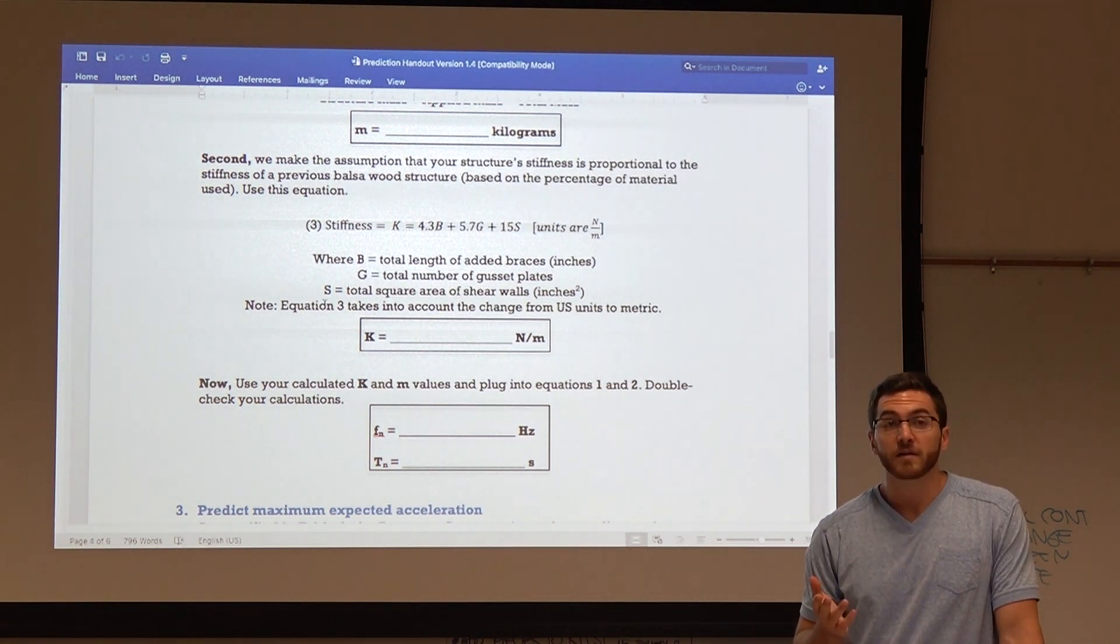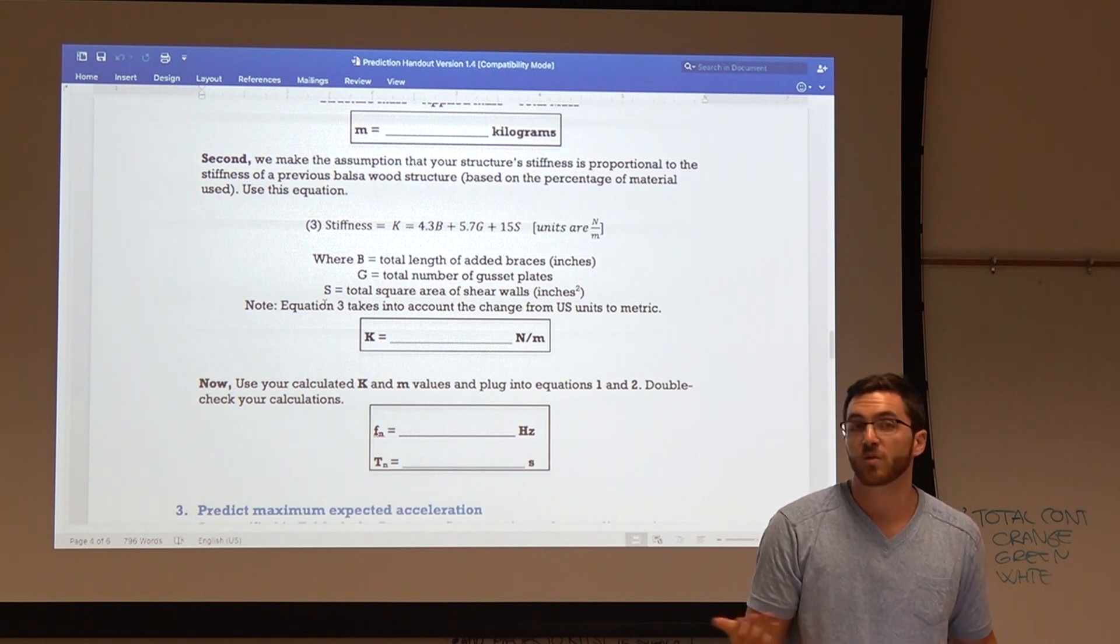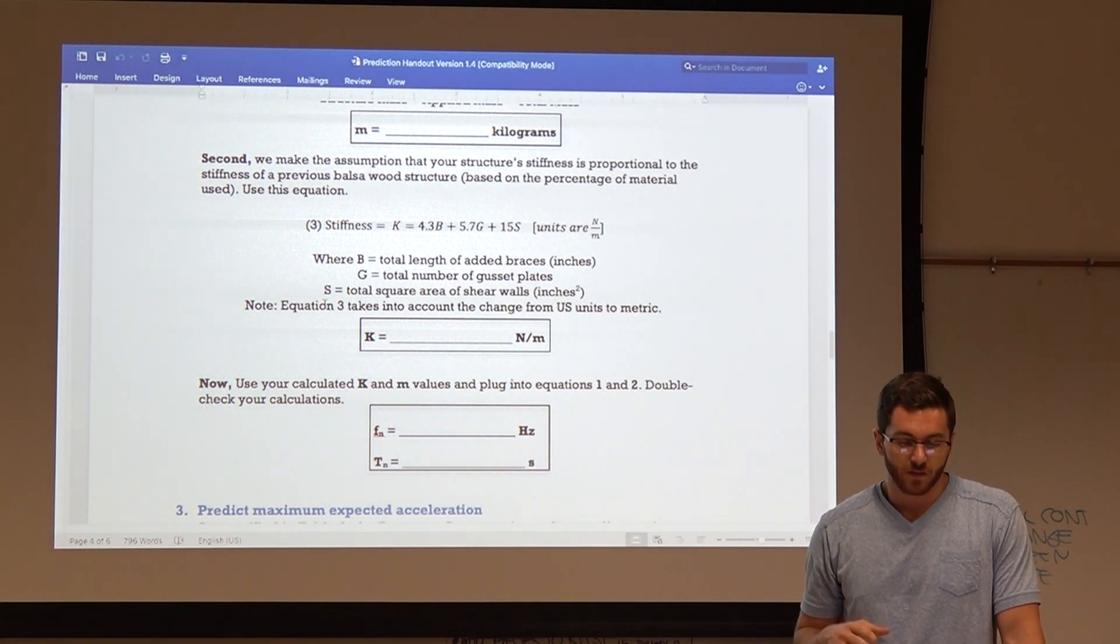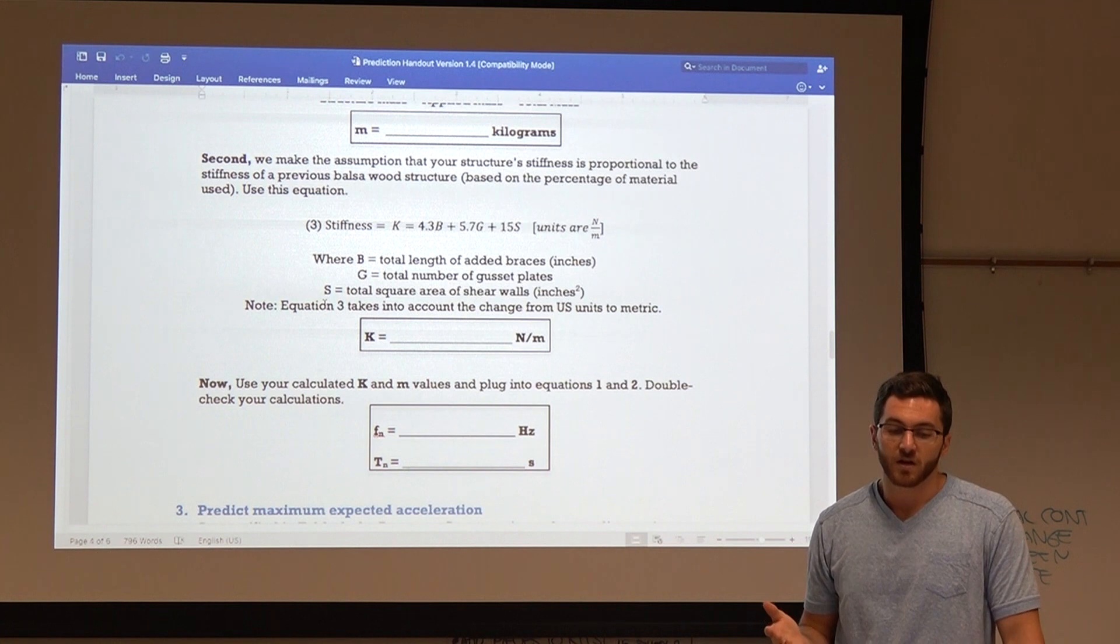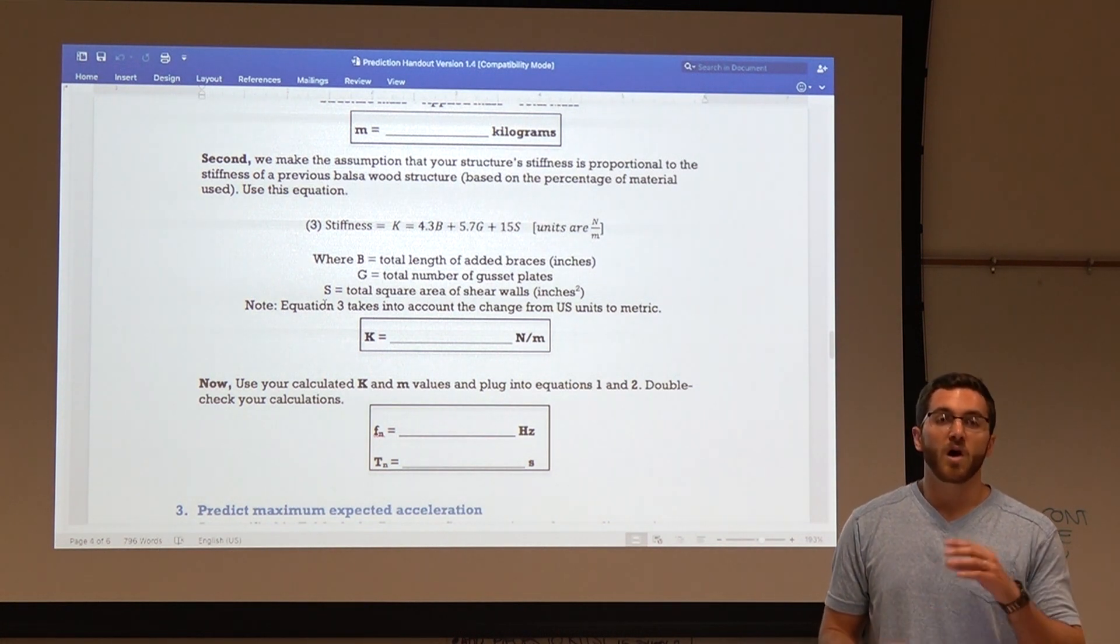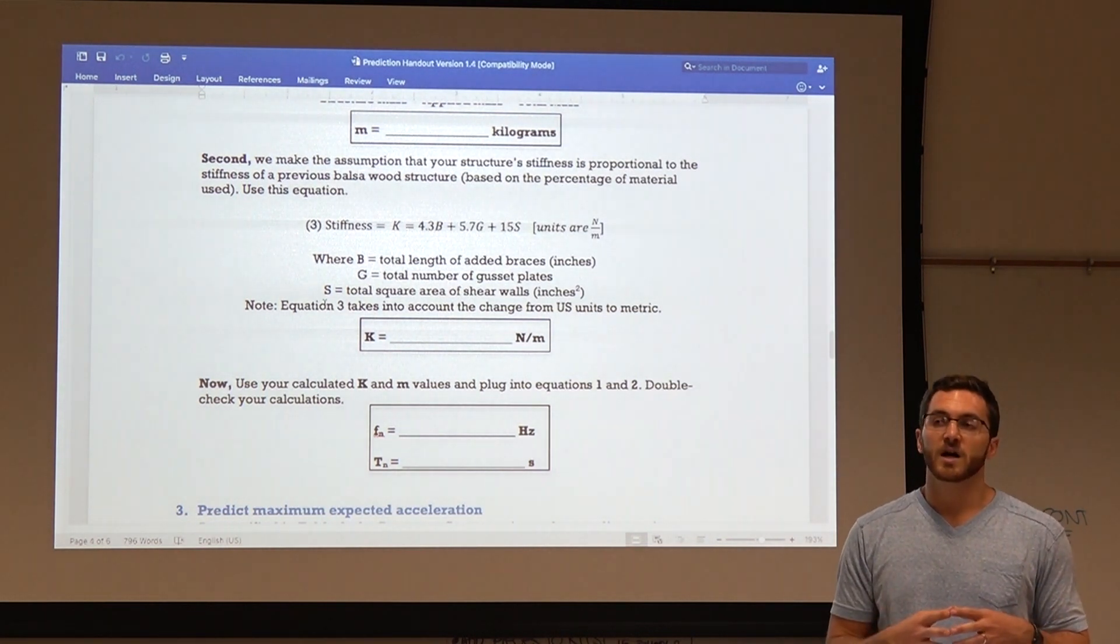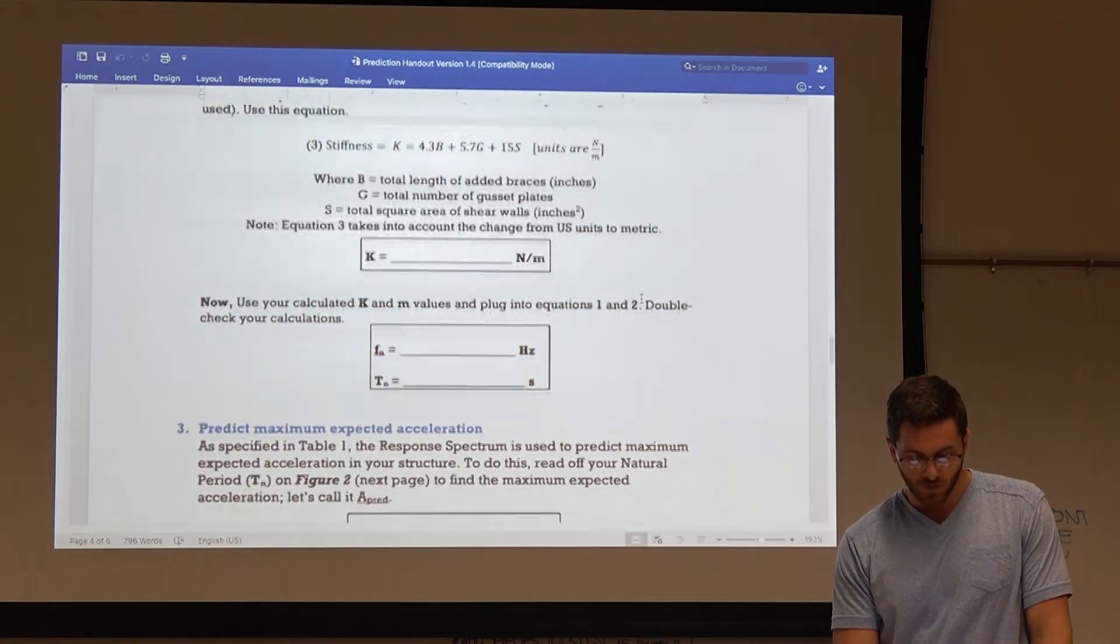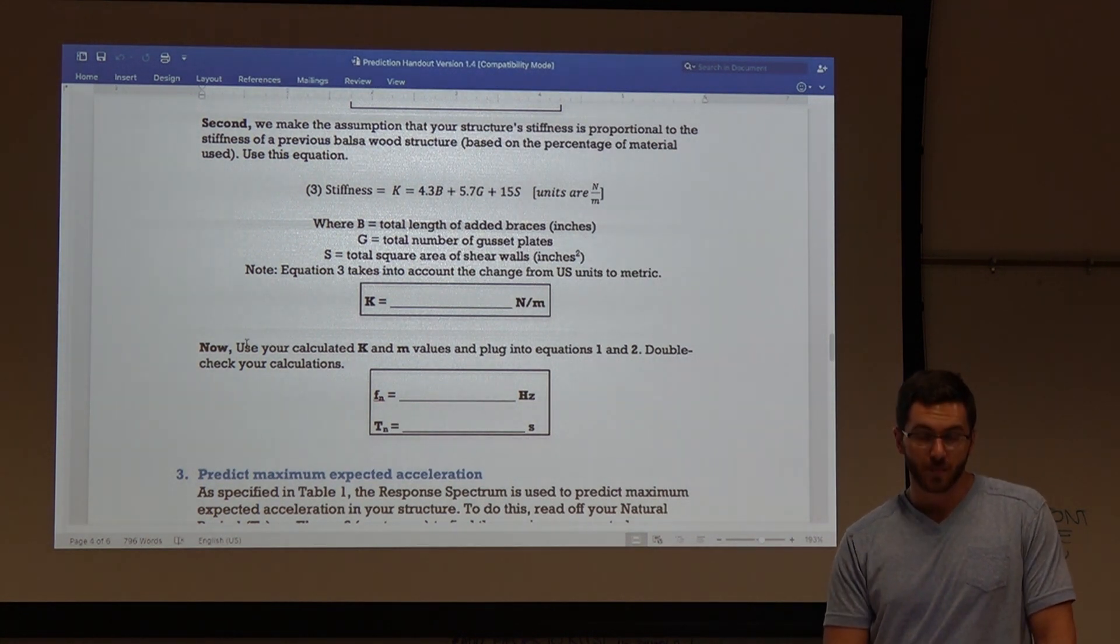But, if I put a bunch of braces in only one location, and nothing anywhere else, we don't know how much stiffer our structure got. Right? So, this equation, there's ways that it is accurate, but it's not going to be completely accurate. So, the more symmetric that your structure is, the more accurate this equation will be. But, the more odd and asymmetric that your configuration of braces and shear walls is, will make this less accurate. But, we can use it to approximate. So, once we have K and M, we can calculate our natural frequency and natural period using the equations above in the handout.